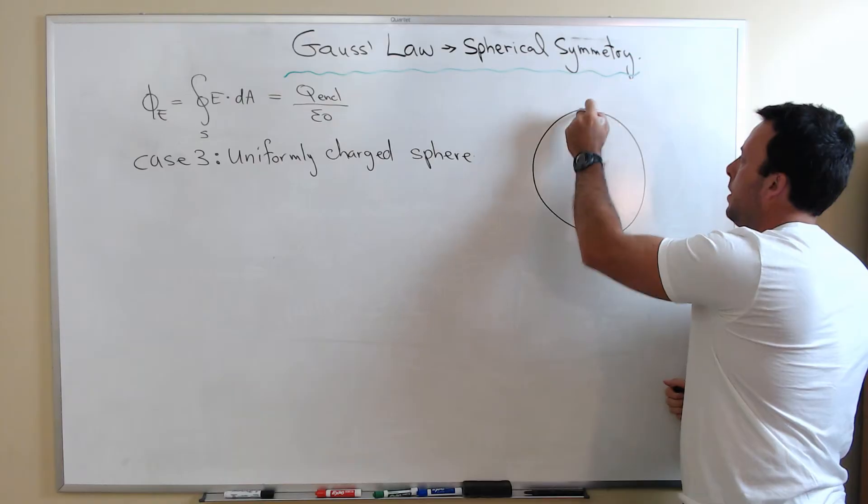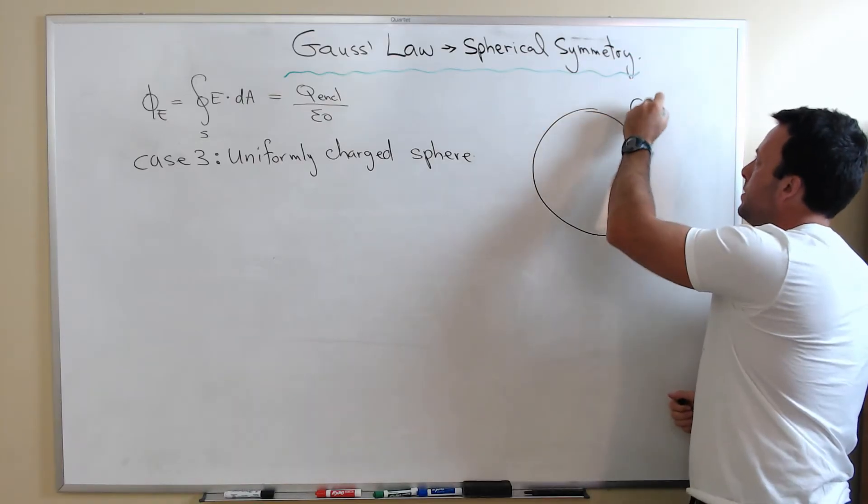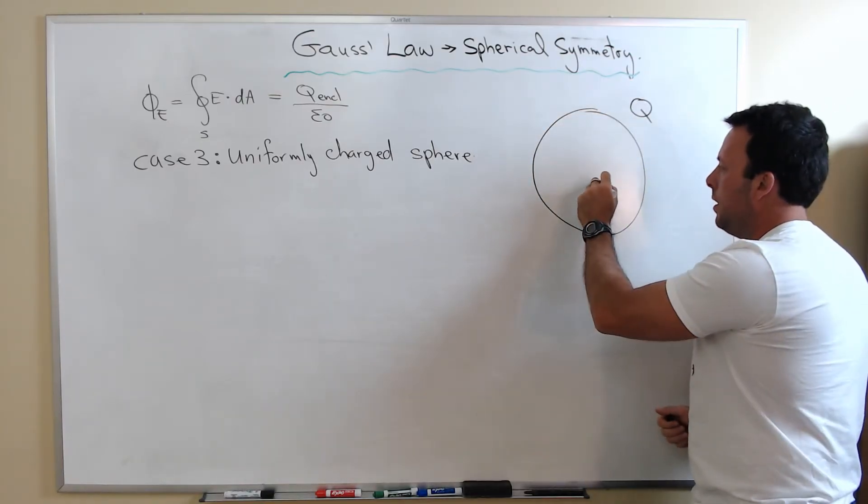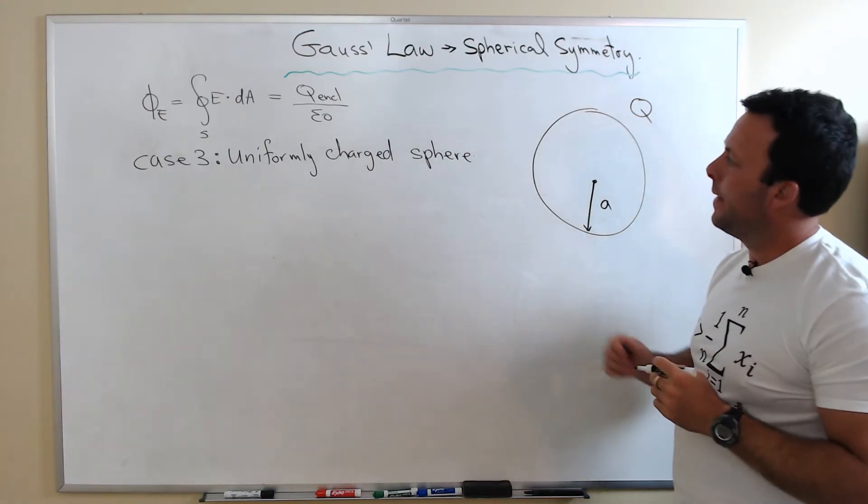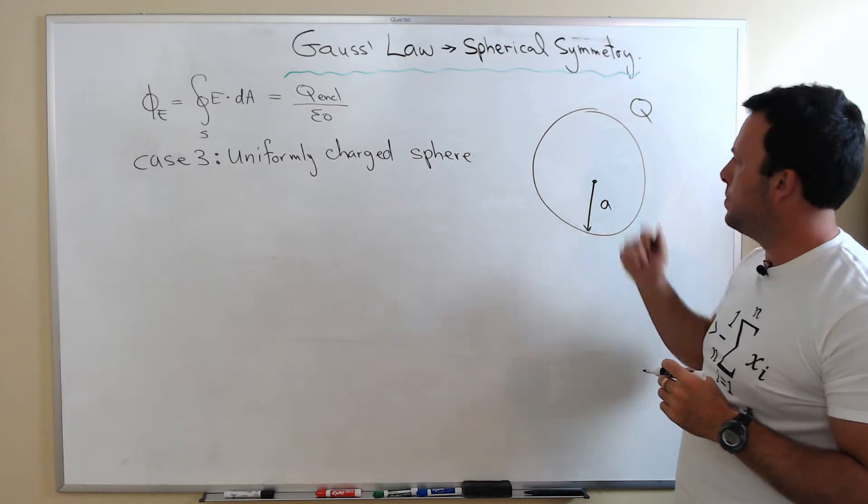Let's draw a sphere. The total charge of the sphere is going to be Q. The radius here, let's consider a sphere of radius A. I want to apply Gauss's Law to this specific problem.